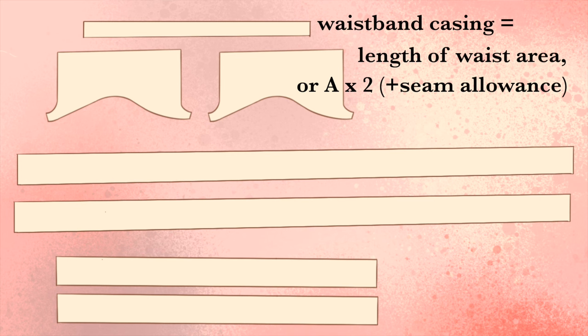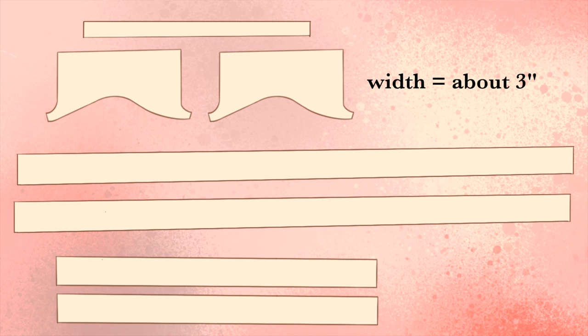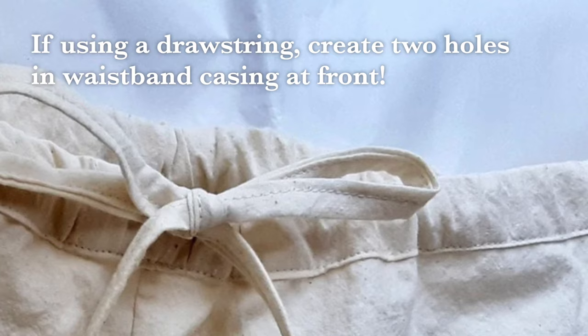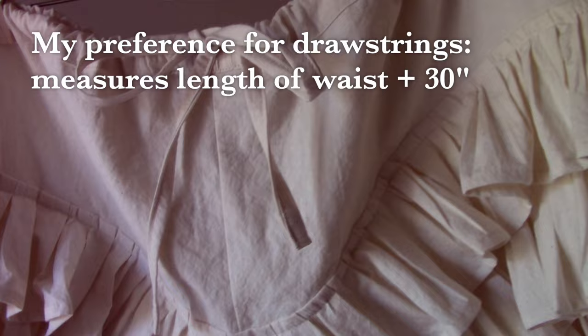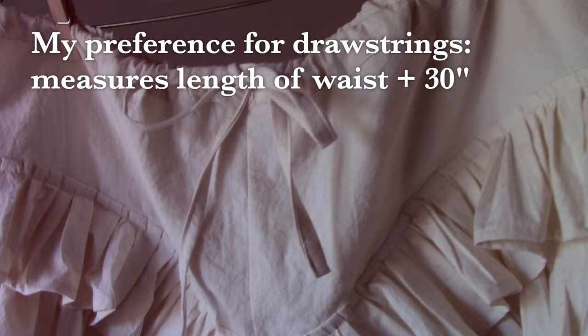Now for the waistband casing, you'll need a piece of fabric the length of your waist area, or the measurement from part A multiplied by 2. The width of this casing may vary depending on how you want to make your waistband, but mine are usually a little under 3 inches wide. The elastic I use for these is about 3/8 of an inch wide. If you're using a drawstring, you'll need to remember to put two holes in your waistband casing. Generally, I make drawstrings that measure the waistband plus 30 inches, but this can vary a lot depending on your personal preference.